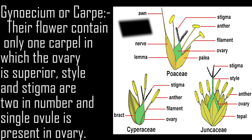Gynoecium or carpel. Their flower contains only one carpel in which the ovary is superior. Style and stigma are two in number, and a single ovule is present in the ovary.